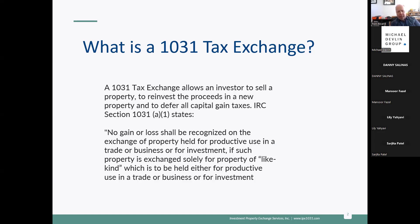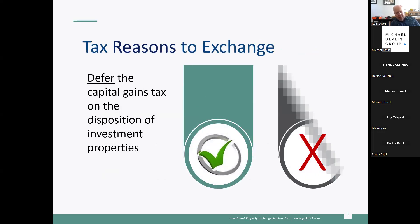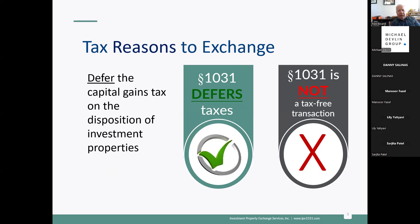If your client has a rental house, you list the property, go through the regular escrow process. At close of escrow the money comes to a third party called the intermediary — that's us. You help them find the replacement property, go through that escrow, and we send the money to the title company. As long as you don't touch the money, you defer paying taxes on the profit.